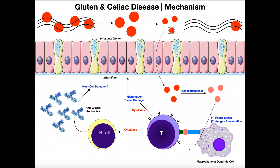Small peptides can, in some cases, cross through the cells that make up the small intestinal wall. Normally we think of things like amino acids, dipeptides, or tripeptides crossing. But for different reasons, sometimes larger peptides can actually cross the intestinal wall and get into the interstitium — and that's really where the problem begins.